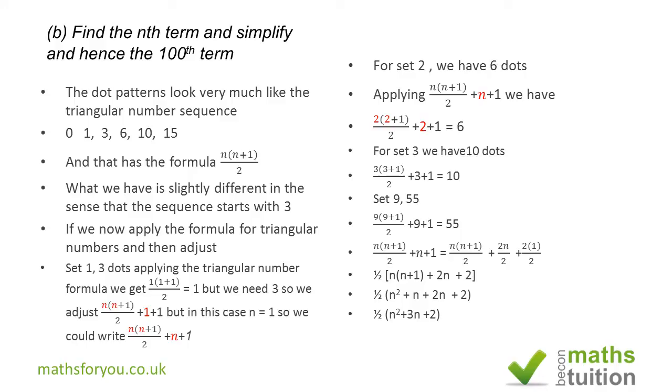So to find the hundredth term, what we then do is a half times 10,000, because 100 squared is 10,000, plus 3 times 100 which is 300, plus 2. And when you have that, you're going to end up with 5,151 dots.